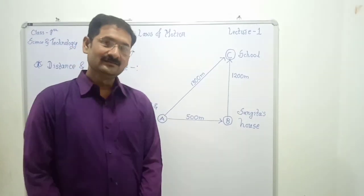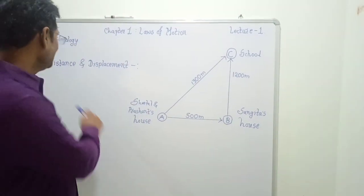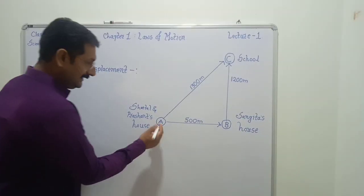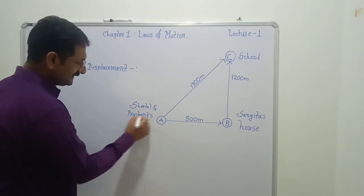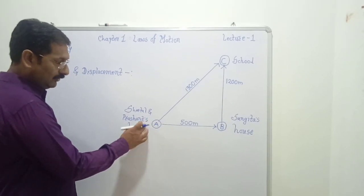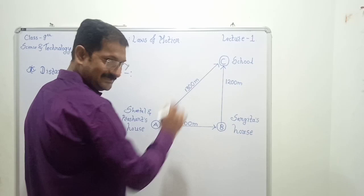So friends, in this chapter we have to study about distance and displacement. Let's study the concept of distance and displacement. Friends, observe this setup. Point A is house of Shital and Prashant. From this point A, they both go to school at C.